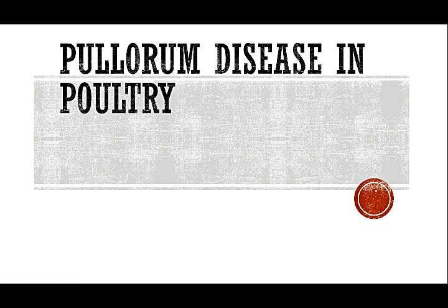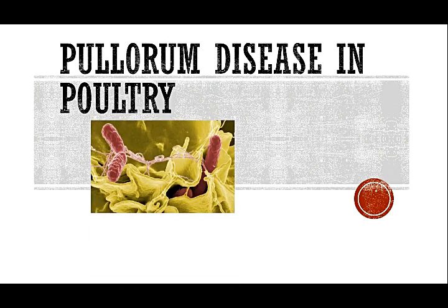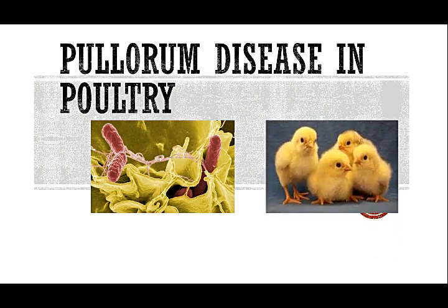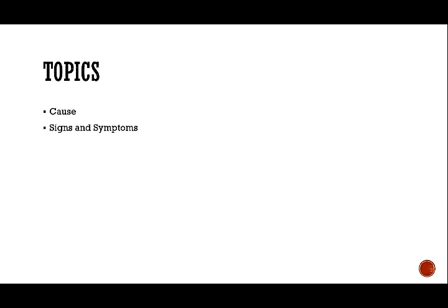Welcome. Today we are going to study about Pullorum disease, which is mostly found in young chicks up to two to three weeks of age. The topics we will address are: the causes of the disease, the signs and symptoms associated with the disease, post-mortem lesions, and finally the treatment protocol and preventive measures.